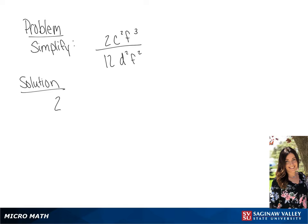We have 2c squared f cubed all over 12d squared f squared. We can simplify 2 over 12 to be 1 over 6.